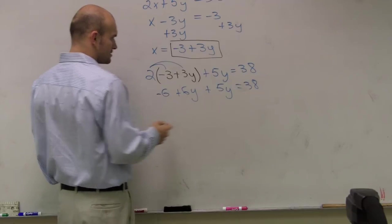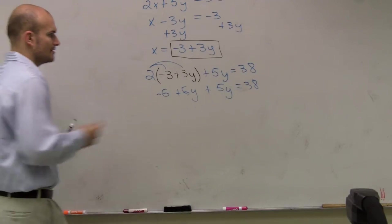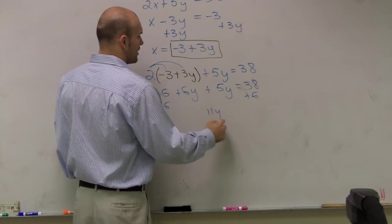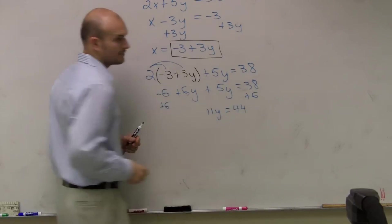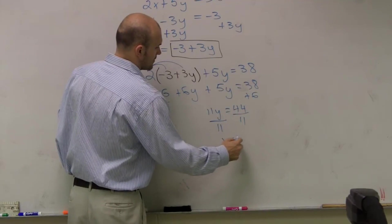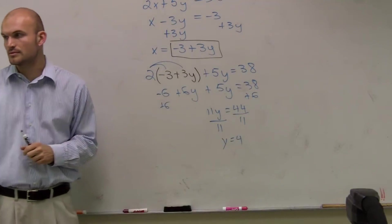This is going to give us, was that 44? Yeah. This is 44. So when I add my 6 to the other side, I get 11y equals 44. Right? Thank you. Divide by 11, y is going to equal 4. Does everybody see that?